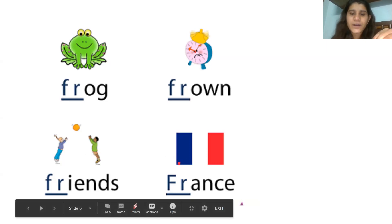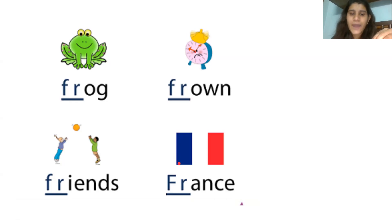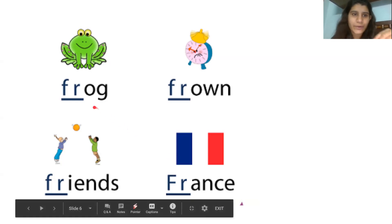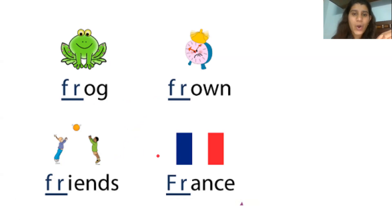The next is Fr-ance, France. Fr-ance, France. Repeat. Fr-ance, France. Great. Now let's say them together. Frog, frown, friends, France. Faster. Frog, frown, friends, France.